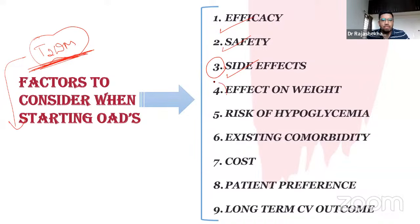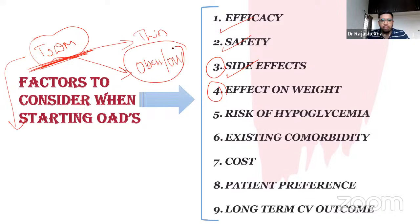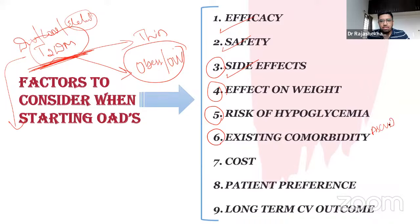Other important factors include risk of hypoglycemia — especially for drivers, elderly bedridden patients, or those living alone — existing comorbidities such as atherosclerotic cardiovascular disease, risk of major cardiovascular events, or CKD, the cost of the drug (a major factor in India), patient preference, and long-term cardiovascular outcome data, which is now required for drug approval.